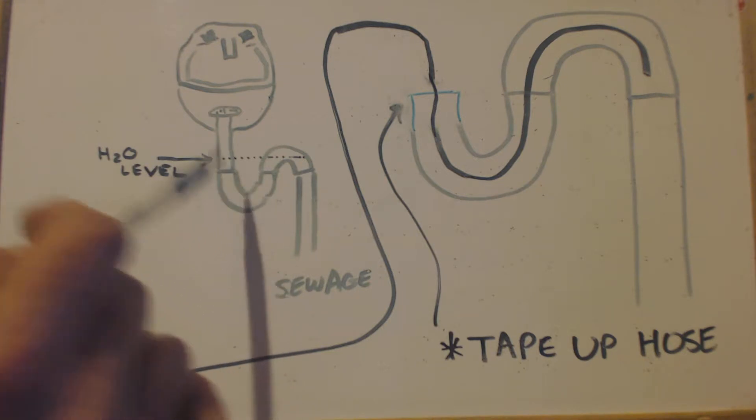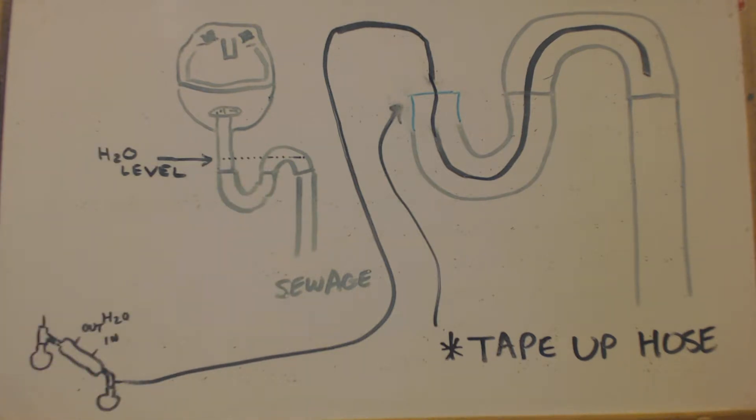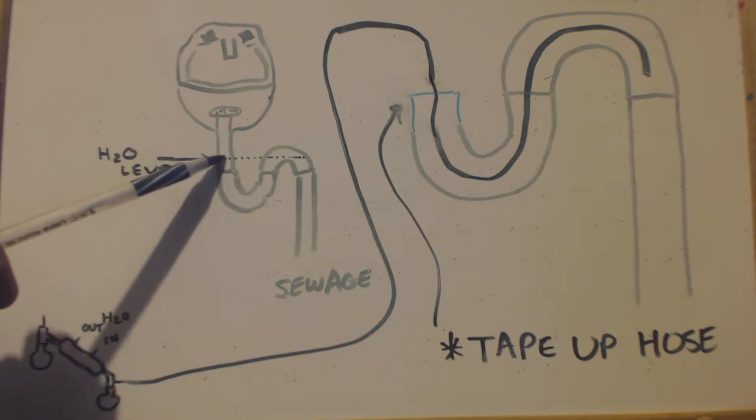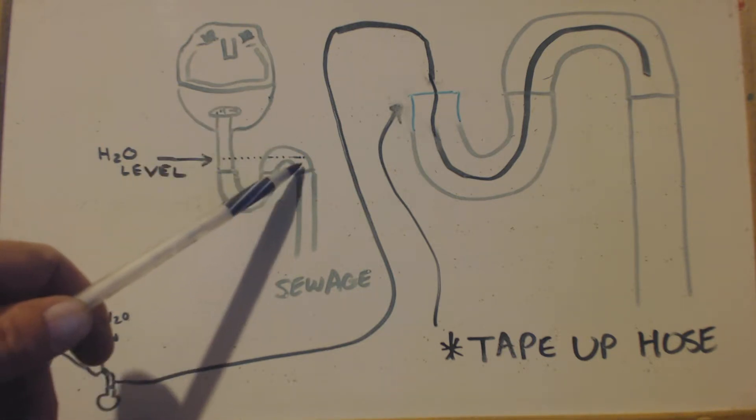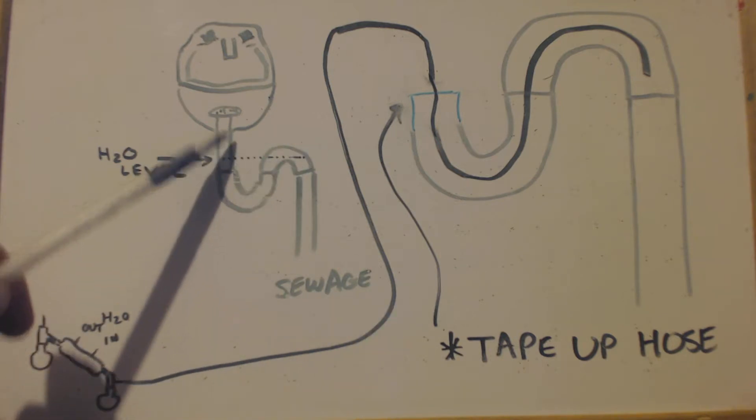What you do is you can take this off right here. Keep in mind the water level's up to here, so you're going to have to put a bucket under here, catch the water. Then you can swivel this, swivel it out so that it's not directly under here.